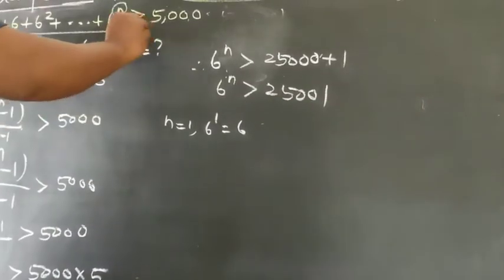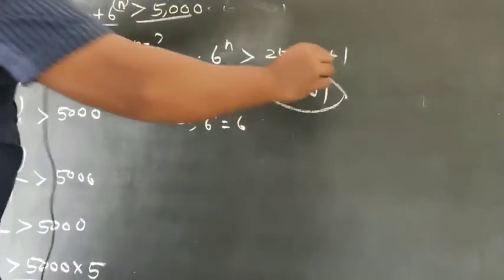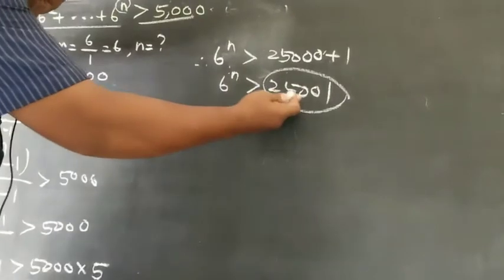We have to find which power of 6 exceeds 25,001. We will check by putting in the values for n.